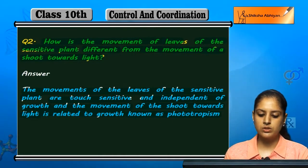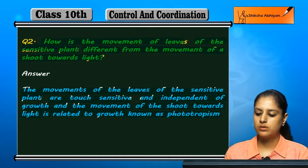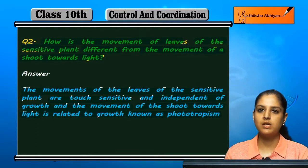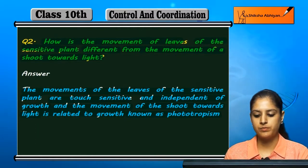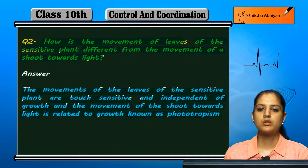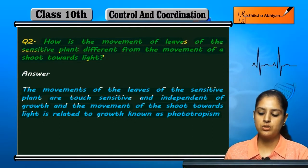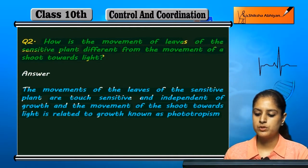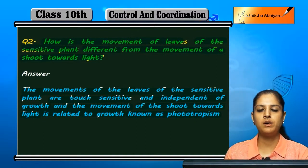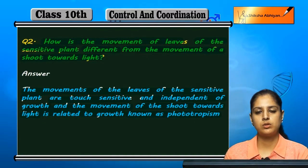The movement of the shoot, however, is related to growth, and this is known as phototropism. Phototropism is the response of the shoot towards light, which is dependent on growth.